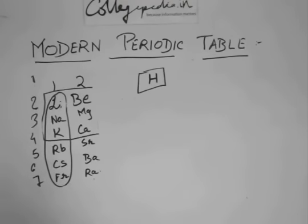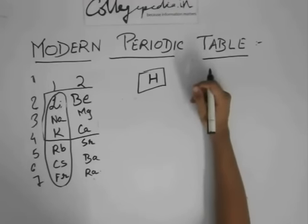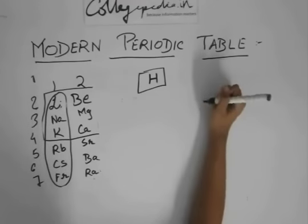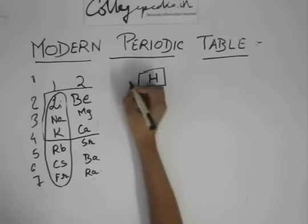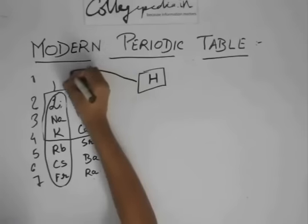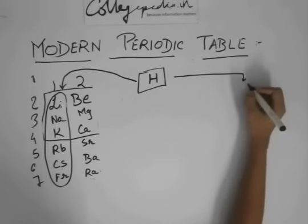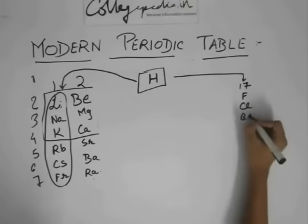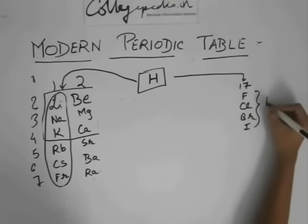Why is hydrogen not given any fixed position? Why is hydrogen placed separately in the periodic table? The answer is that you can't decide where to place hydrogen, because hydrogen has similar properties with Group 1 and it also has similar properties with Group 17, which consists of fluorine, chlorine, bromine, iodine and so on. These are known as halogens.